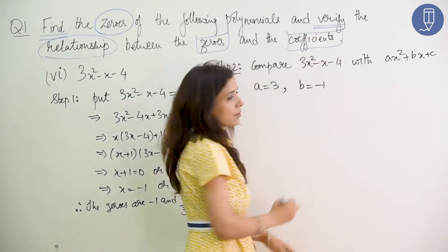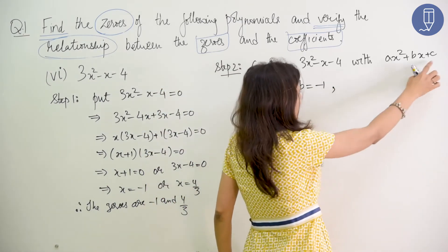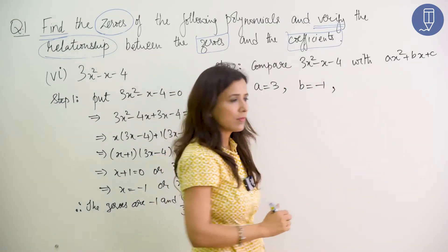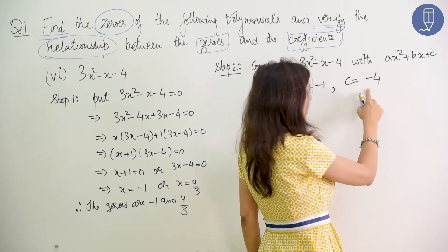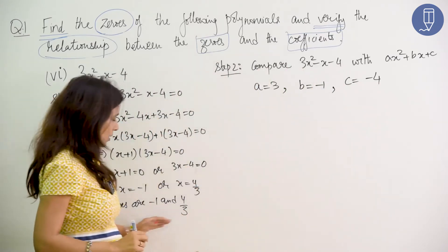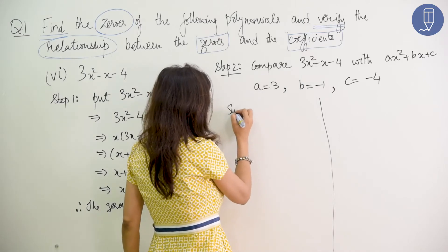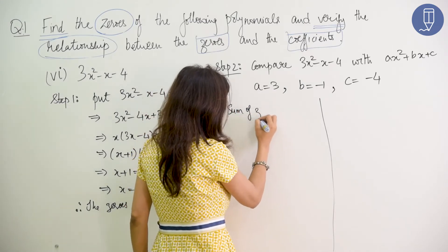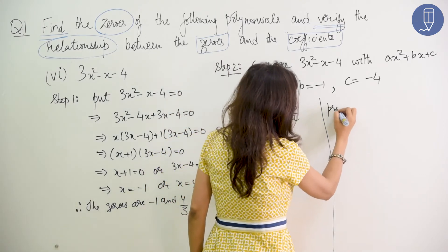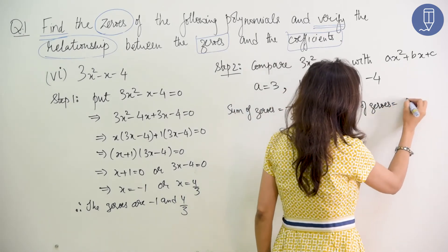The value of b is minus 1. The constant term is c; here c is minus 4. The relationship is: sum of zeros equals minus b by a, and product of zeros equals c by a.